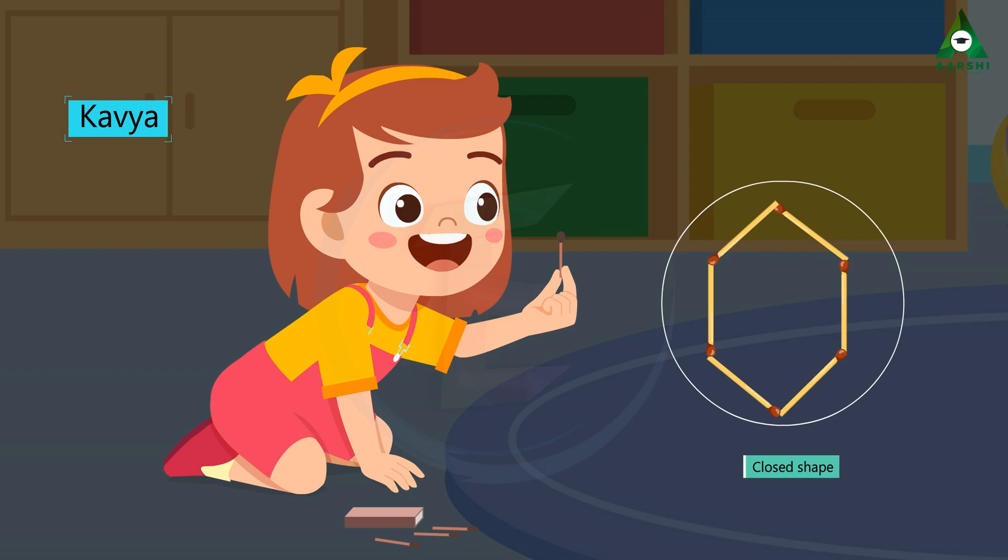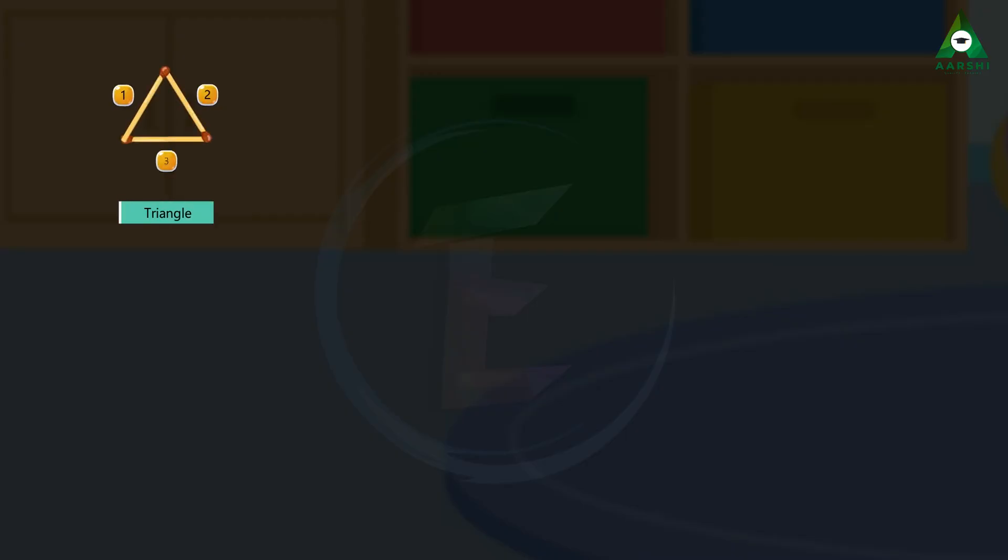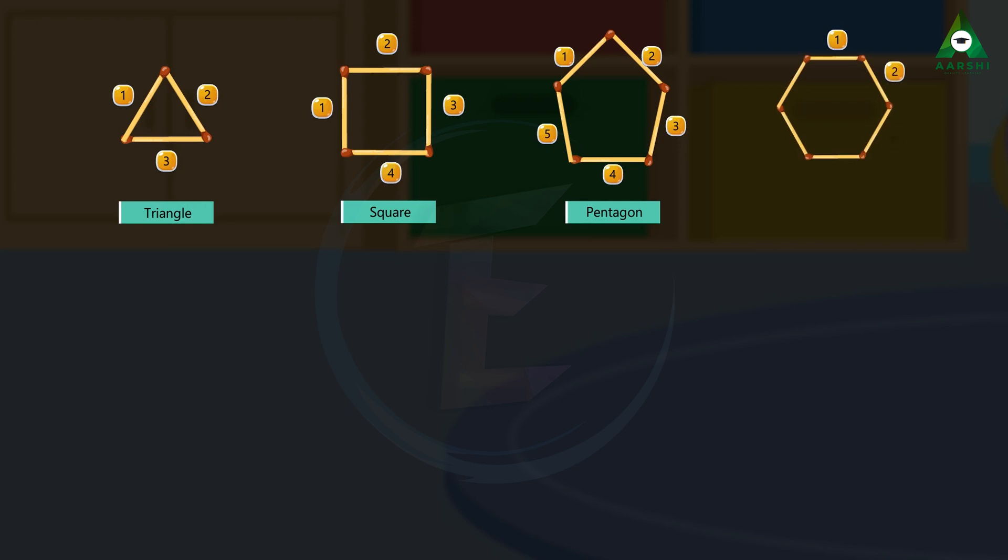A polygon can be a triangle with 3 sides. A square can be of 4 sides. A pentagon can be of 5 sides. A hexagon is made of 6 sides.